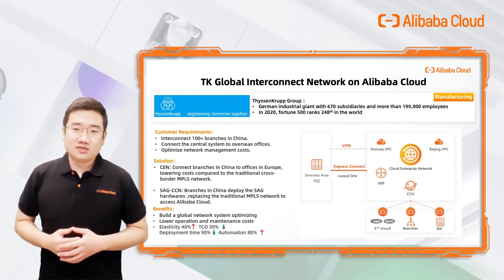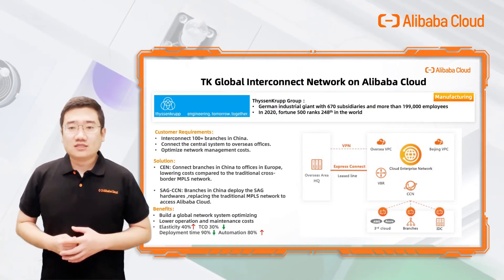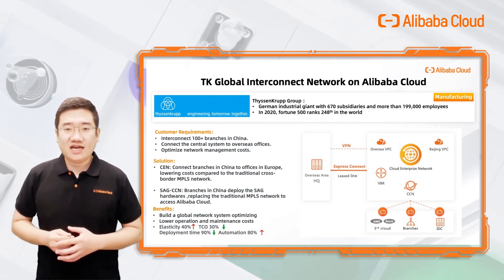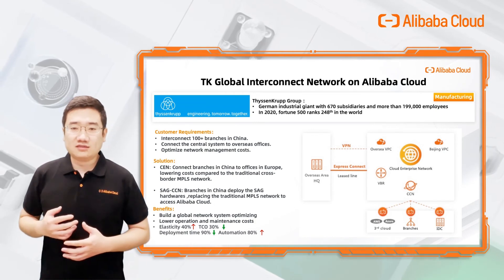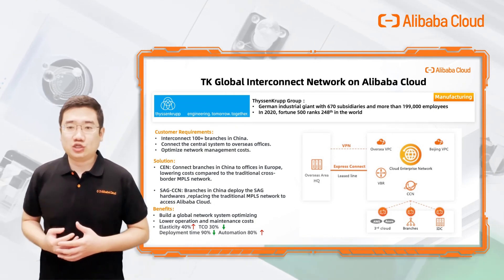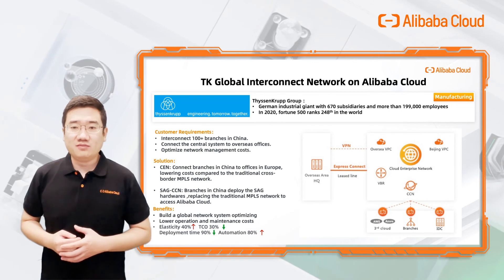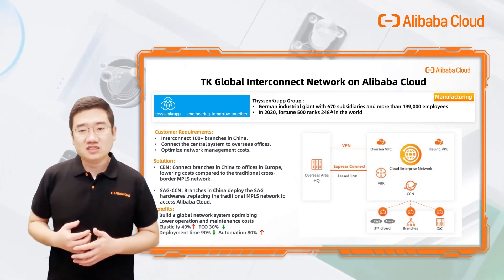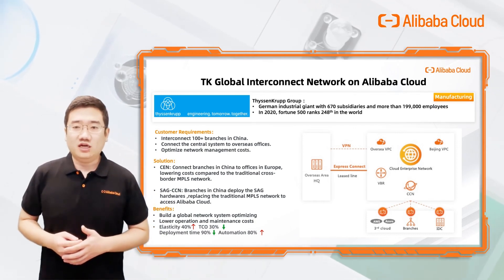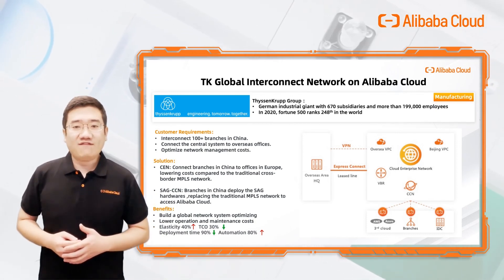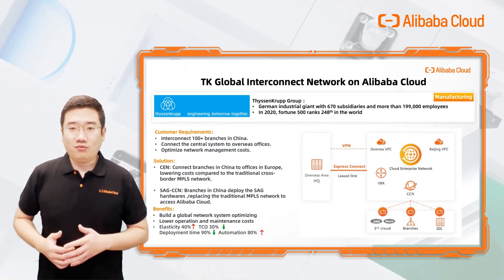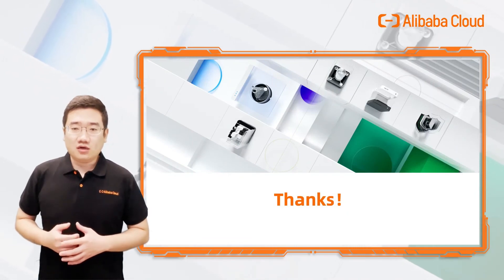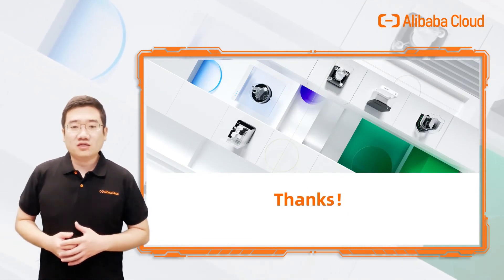Let's look at a customer use case. The German industrial company ThyssenKrupp has more than 100 branches in China mainland and needs to connect a central system to the overseas IDC and HQ. The key points are network performance, management, and cost. We helped ThyssenKrupp build a global network system on Alibaba Cloud with SAG and CEN. The results were very good in terms of elastic resource deployment time and automation. That's our hybrid cloud network solution — thanks for listening.